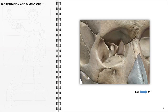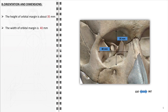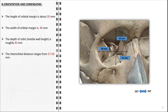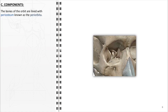The orientation and dimensions of the orbit are defined by several key measurements. The height of the orbital margin is about 35 mm, while its width is approximately 40 mm. The depth of the orbit, measured as the length of the medial wall, is roughly 45 mm. The interorbital distance ranges from 27 to 33 mm, and the volume of the orbit is less than 30 cubic centimeters. The bones of the orbit are enveloped in a specialized periosteum known as the periorbita.